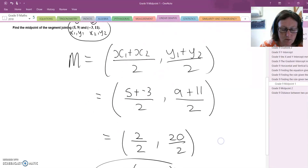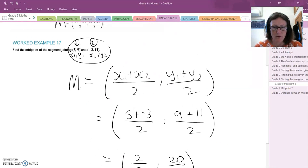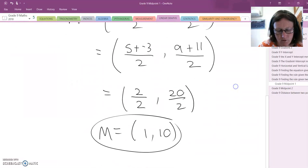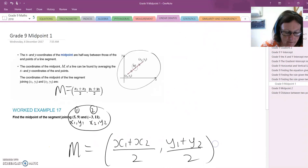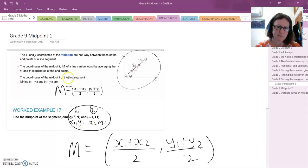And you could do a little sketch of that just to visualize how it works. Plot the point 5, 9, plot the point negative 3, 11. And then you'll see that if you plot the point 1, 10, it does lie halfway along, or it is the midpoint of this line segment.